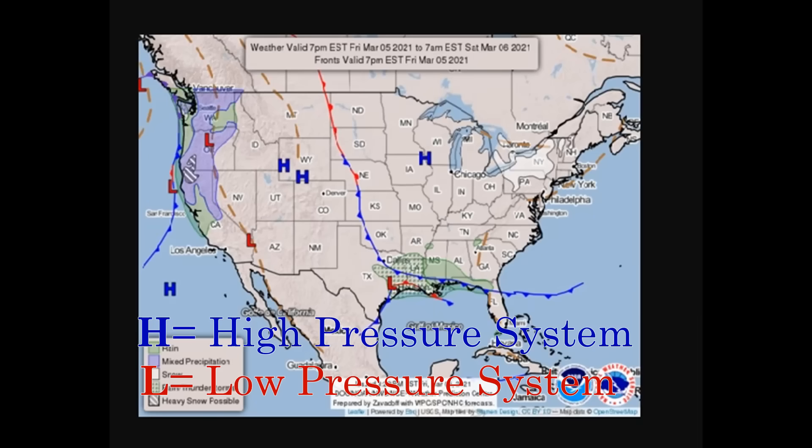The characteristics of pressure systems can be seen on this weather map clearly. High pressure systems are represented by a blue H, and low pressure systems are represented by a red L. The weather is clear in the zones near the blue H; however, there is precipitation and stormy weather conditions in the regions with the red L.